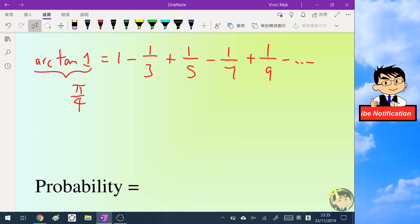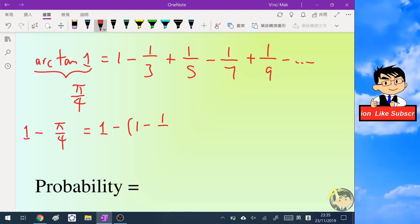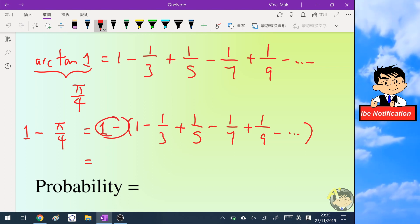So now if we add 1 minus on both sides of the equation, the right hand side will become like this. And notice that the 1 minus will cancel out the first one, and then the minus sign will go into the bracket and change the sign of each number, so it becomes 1/3 - 1/5 + 1/7 - 1/9.